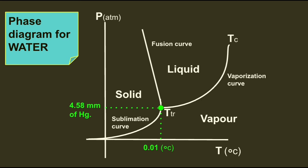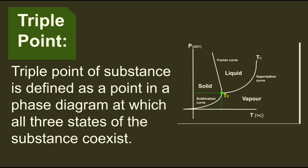So we call it the triple point. The triple point of a substance is defined as a point in a phase diagram at which all three states of the substance coexist.